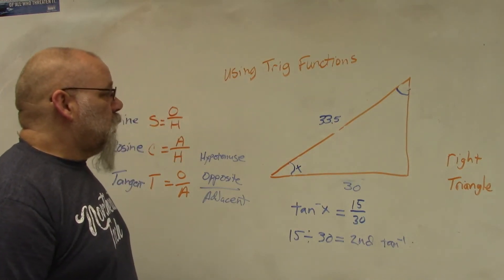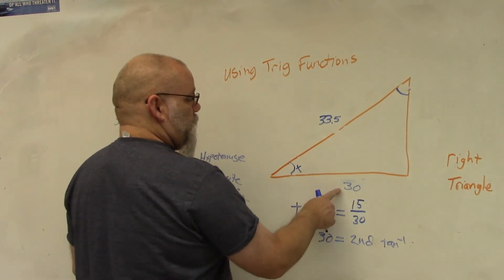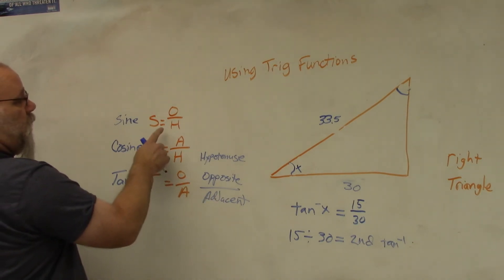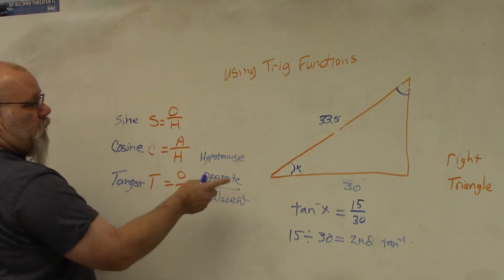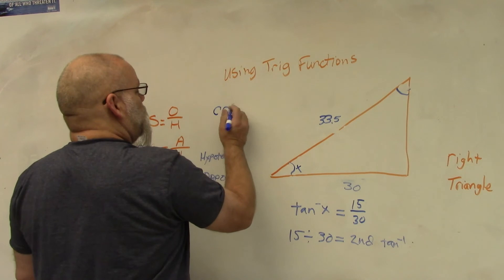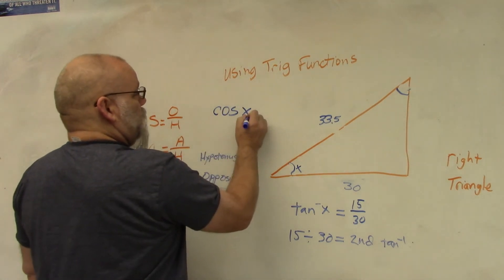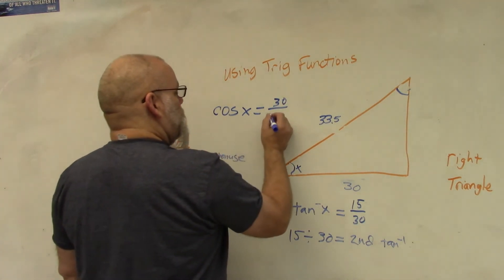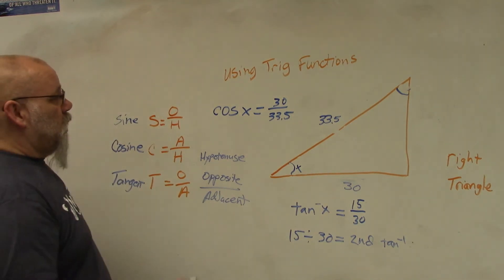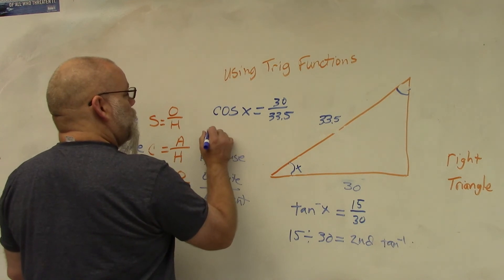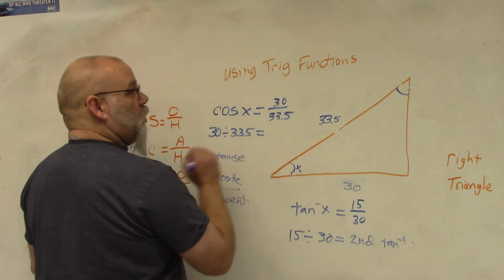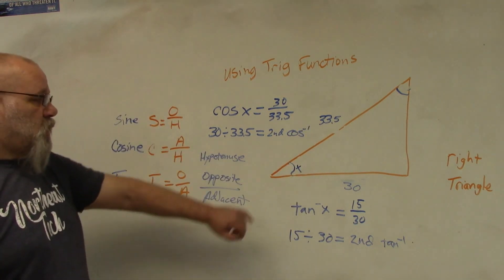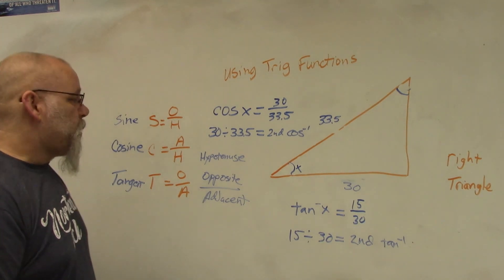Let's do one more example. We have the hypotenuse which is 33.5 and the adjacent side is 30, and we want to find this angle. We have the hypotenuse and the adjacent side, so we use cosine. In the calculator, you put 30 divided by 33.5, hit equals, then hit second function cosine minus 1, and that gives you that angle.